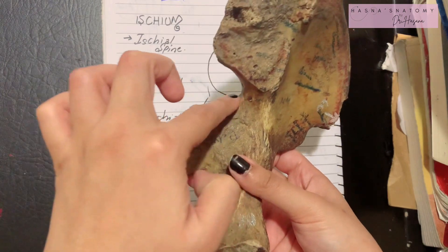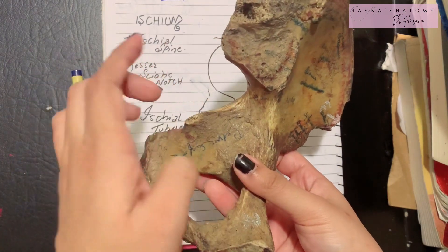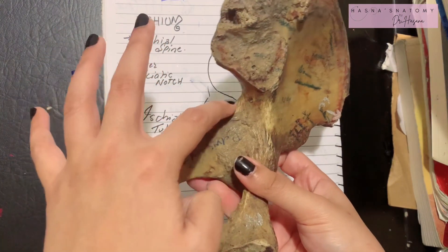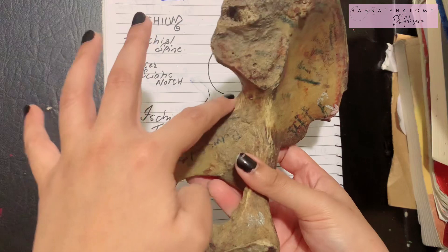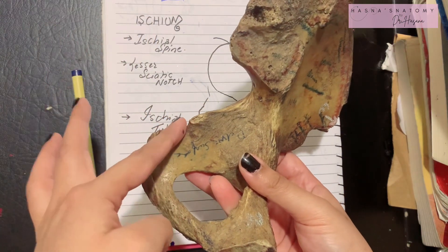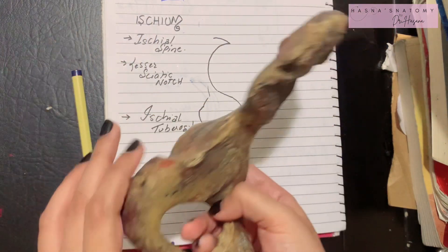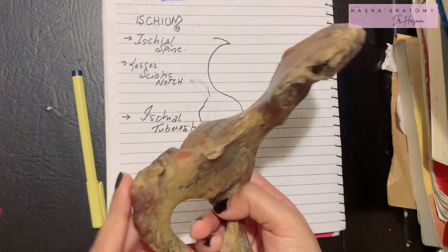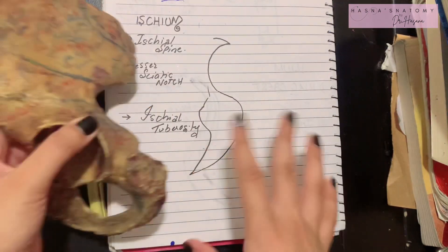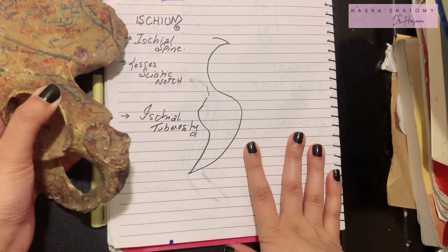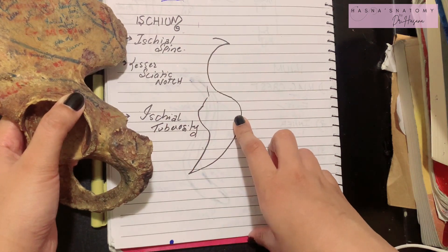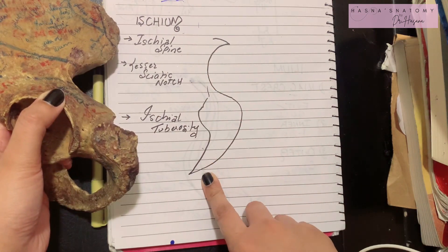The posterior border of the ischium begins from the greater sciatic notch, then becomes the ischial spine, and then the lesser sciatic notch. That's all you need to know about the bony features of the ischium. What's important are the attachments of the ischium.